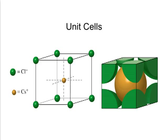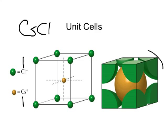Here is cesium chloride. Convince yourself that there is a net total of one chloride ion and one cesium ion in the unit cell, which matches the formula CsCl. Take a look at the space-filling model and confirm that you can indeed see one chloride and one cesium.